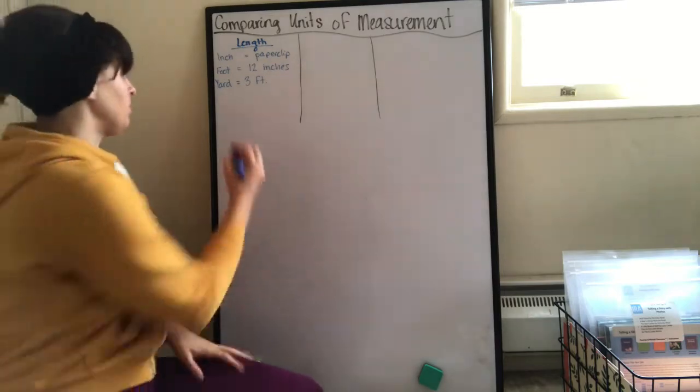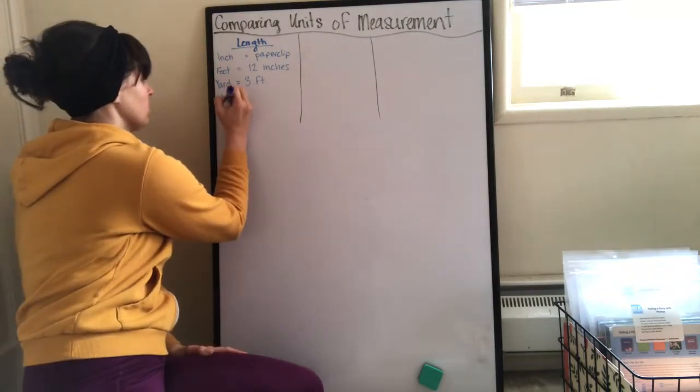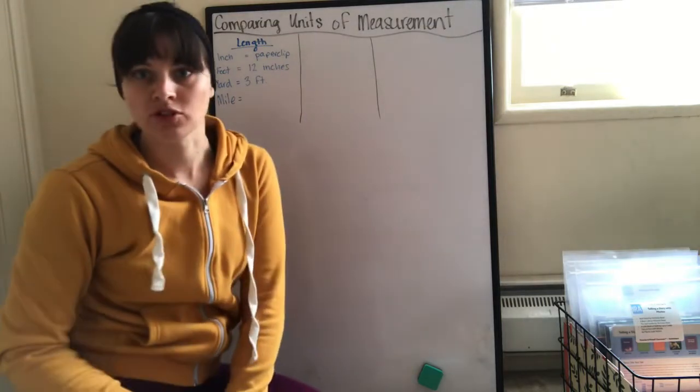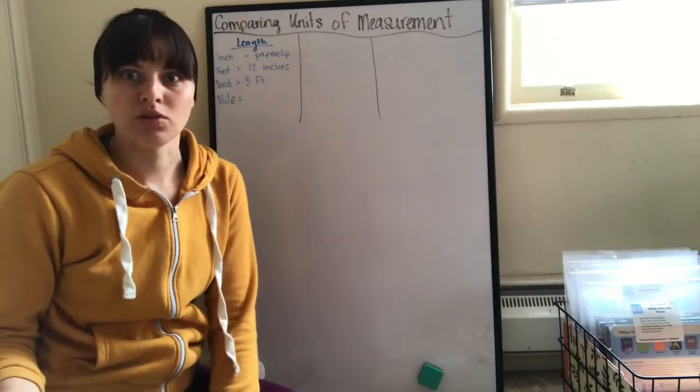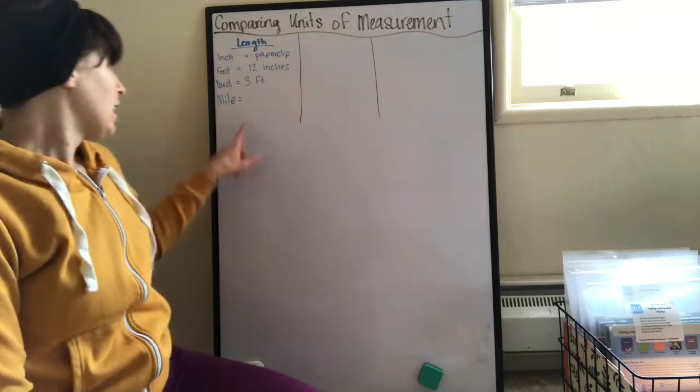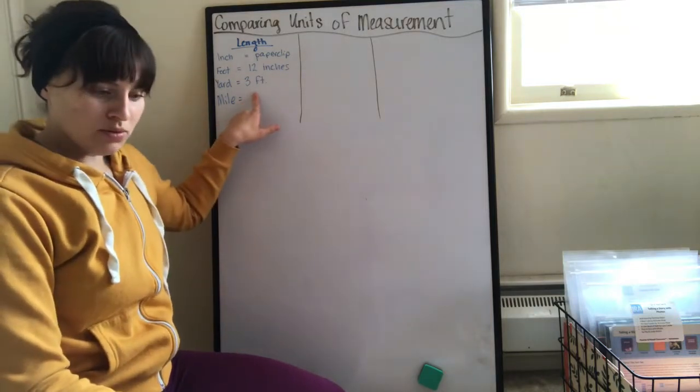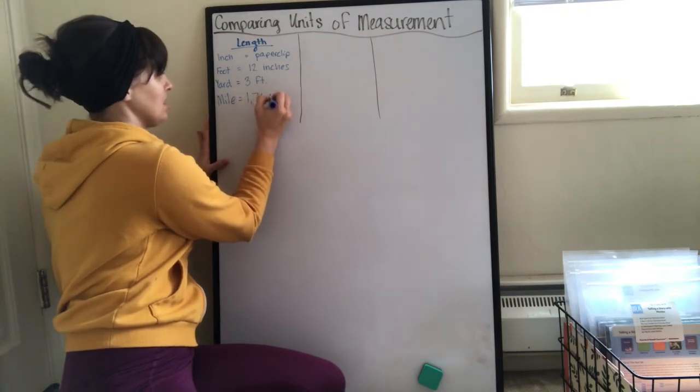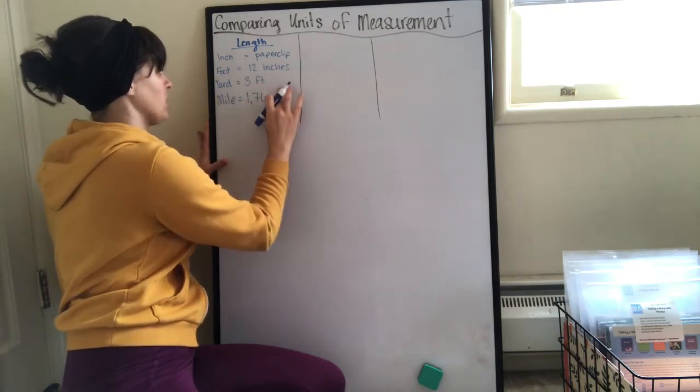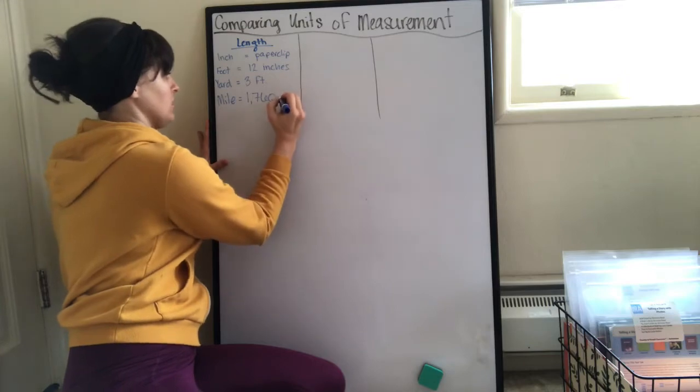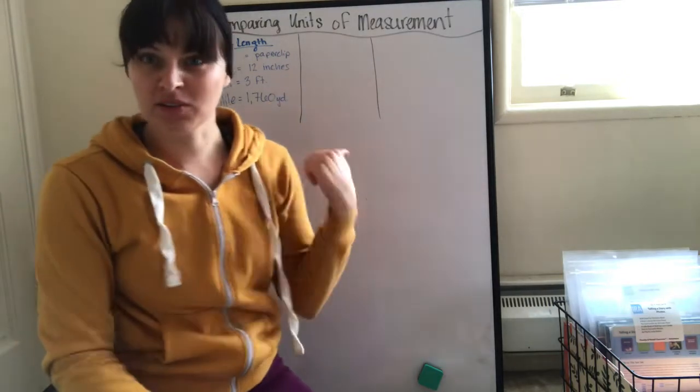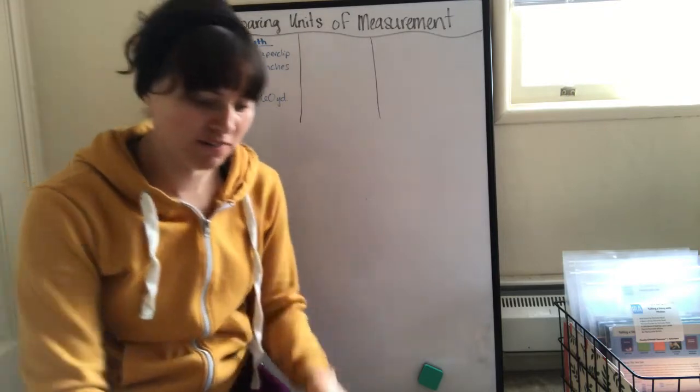Then I'm going to add one that we didn't actually talk about last time, and it's going to be a mile. You know what a mile is, usually we use this when we're talking about driving. One mile is 1760 yards, so it's even more feet. We'd have to multiply that number by three to get the amount of feet.